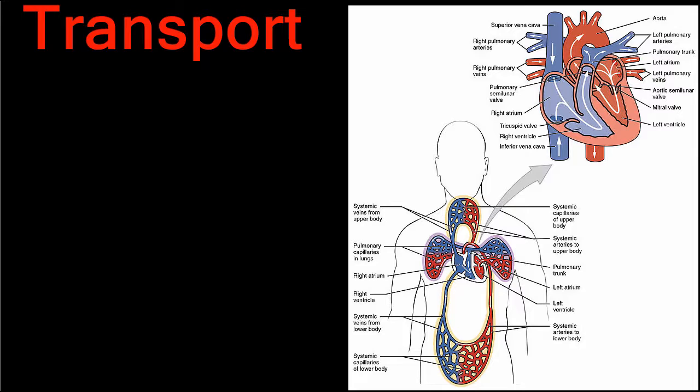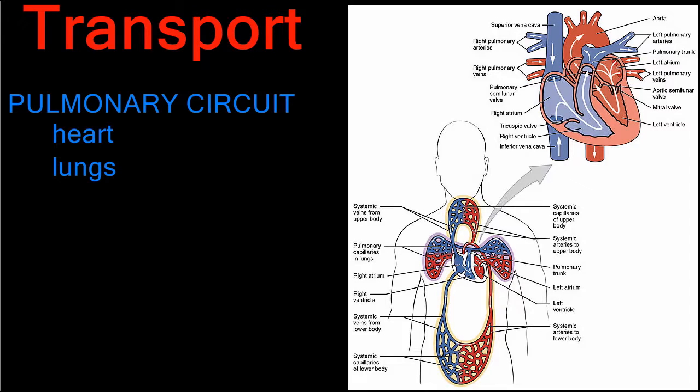There are two circuits involved in circulation: the pulmonary circuit and the systemic circuit. The pulmonary circuit brings blood from the heart to the lungs and back to the heart again. The pulmonary circuit begins when blood flows through the inferior and superior vena cava to the right atrium of the heart.